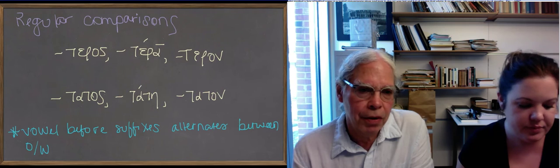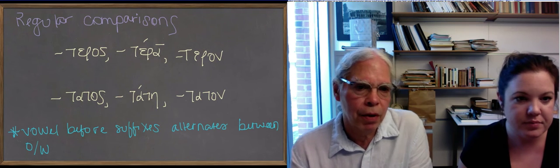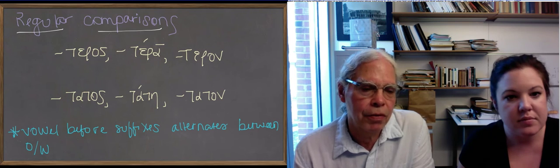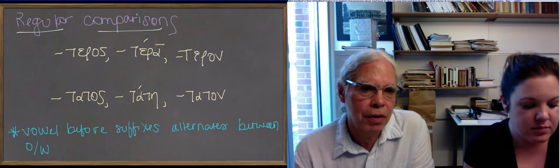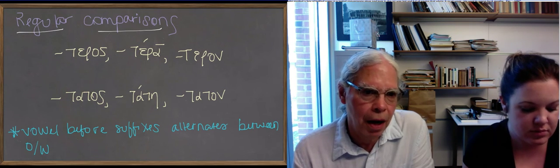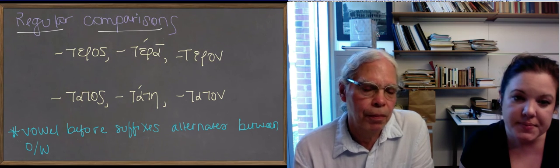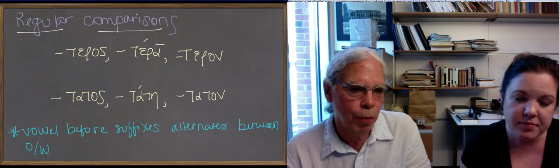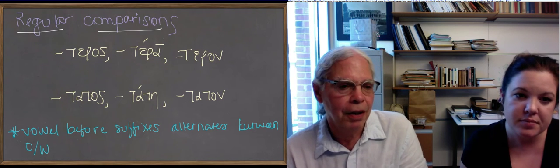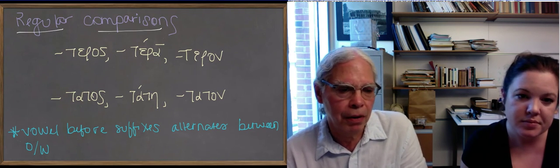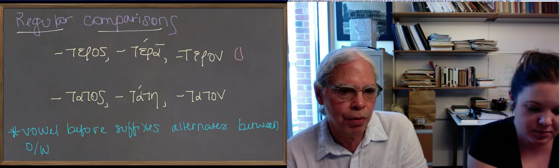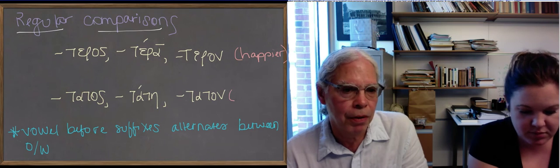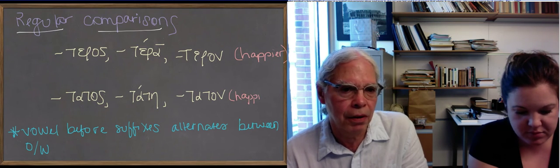Now let's look at the so-called regular way of doing comparison of adjectives, and here are the suffixes. The first one, teros, masculine, tera, feminine, teron, neuter is the comparative suffix, so that means happier, is analogous to happier, and then the second, tatos, is the superlative suffix, that gives you the happiest one, tatos, tate, and taton.